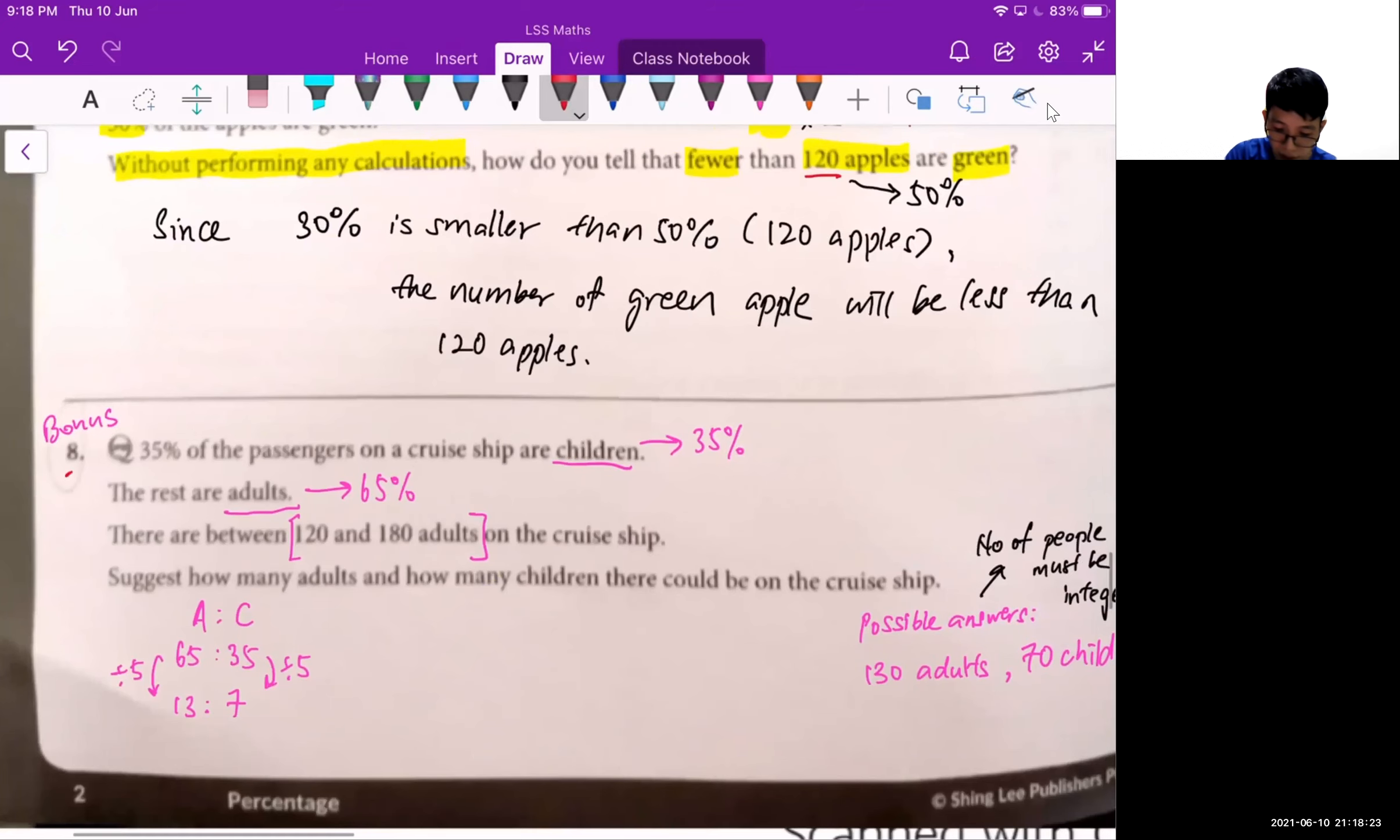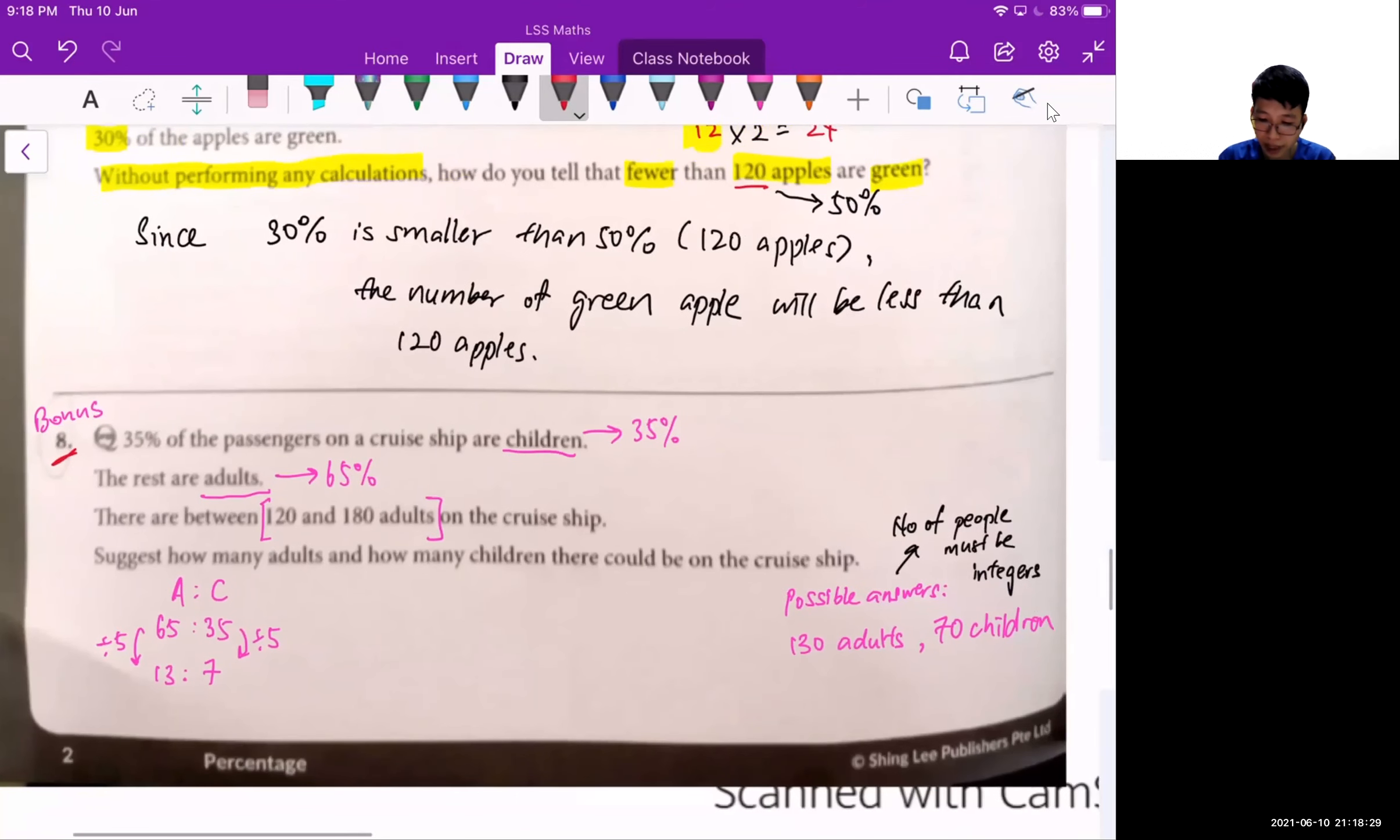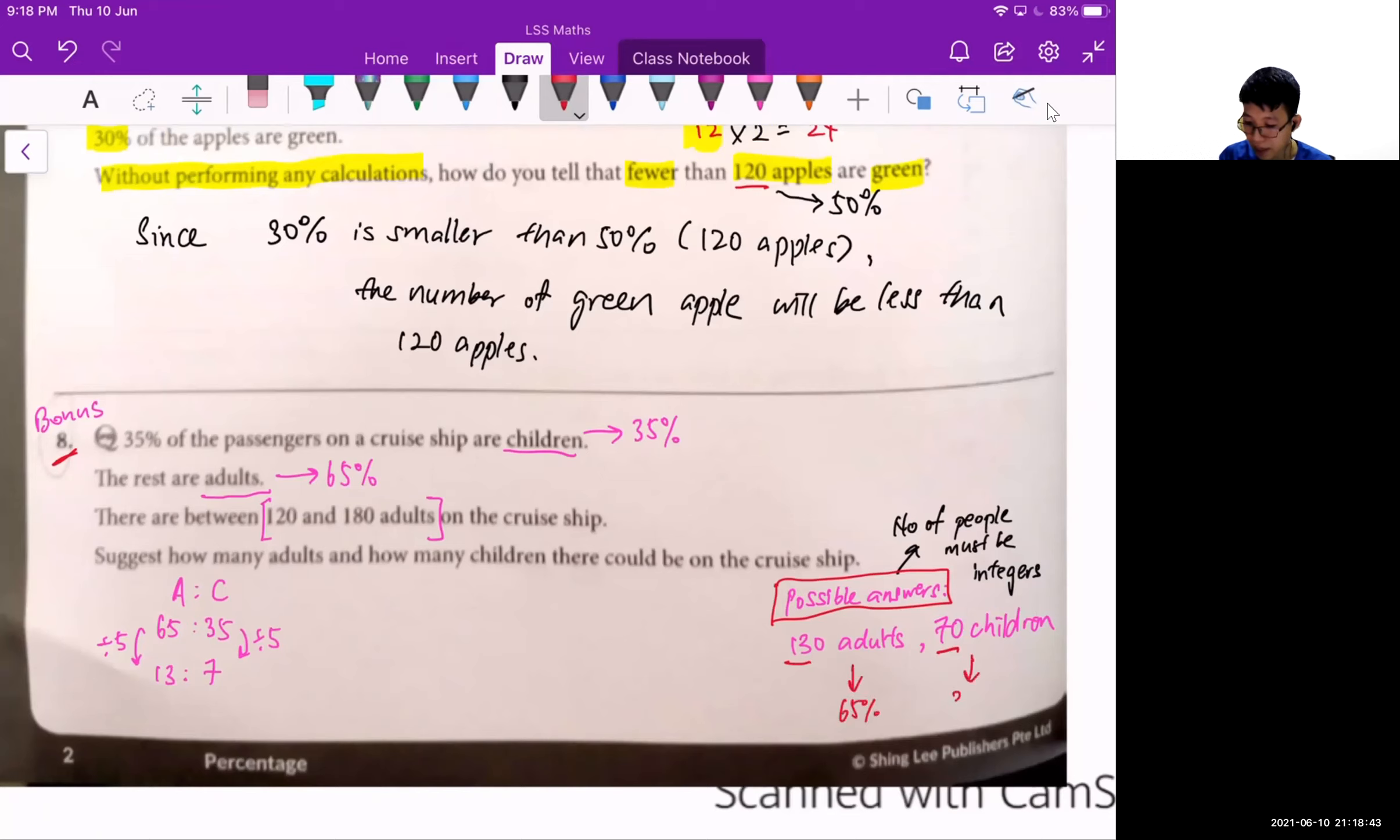Okay, so for question 8, it is just a bonus question. It's just for some of you who want to challenge yourself. You can just try it out. So there are many possible answers. So for example, 130 adults and 70 children also fit the criteria of 65% of them are adults, 35% of them are children.